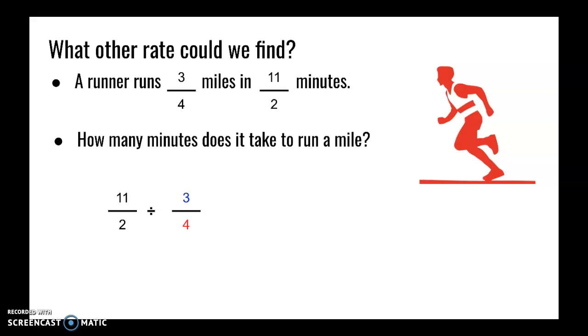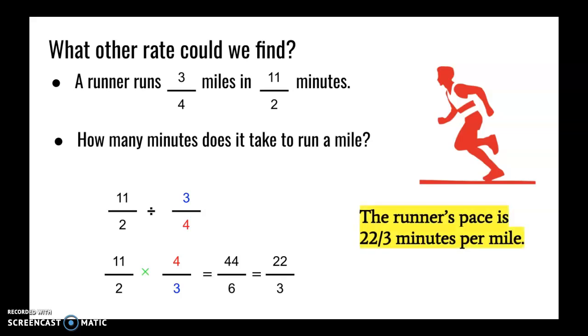Exact same process for division. Multiply by the reciprocal. Keep 11/2, multiply by 4/3, and multiply straight across. We'll get 44/6 or 22/3. So the runner's pace is 22/3 minutes per mile. Are you surprised that these two values are reciprocals?